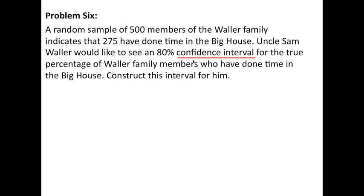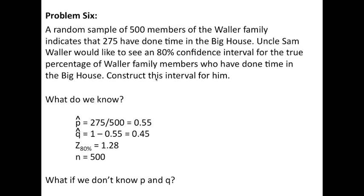The first thing you notice is that this is a confidence interval problem, and it's for the true percentage. So, it's a binomial distribution confidence interval for p. What do we know? We read through and we know p hat because p hat is 275 divided by 500. Once we know p hat, we also know q hat. And a z score for an 80% confidence level is 1.28. And of course, the number in the sample is 500.